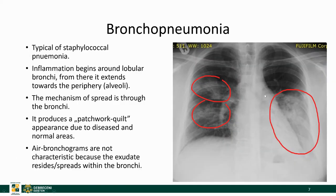Bronchopneumonia is typically caused by staphylococcal pneumonia. It begins around a lobular bronchus and spreads through the bronchi, affecting not only the alveolar space but the bronchi as well. Therefore, you will not see air bronchograms. Since it spreads through the bronchi, it can easily get into different lobes or cross the midline, affecting various lobes or segments, causing the patchwork quilt appearance of bronchopneumonia. Air bronchograms are not characteristic of this disease.